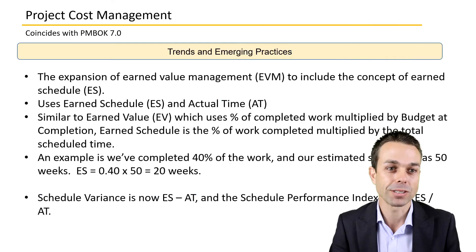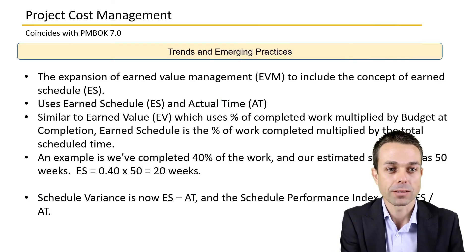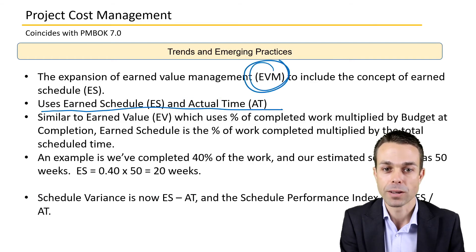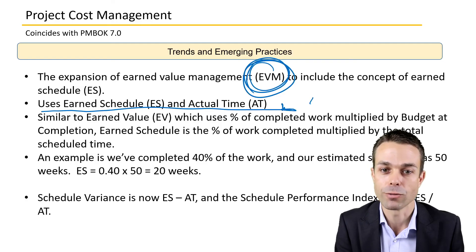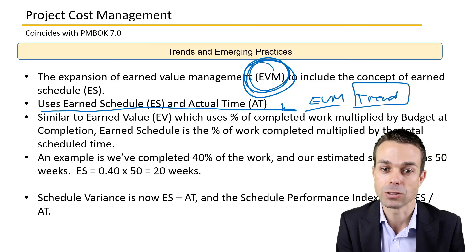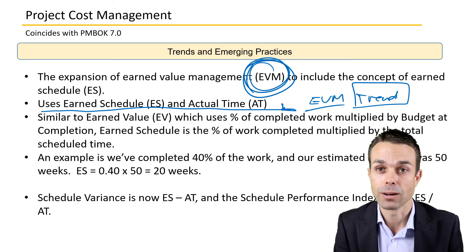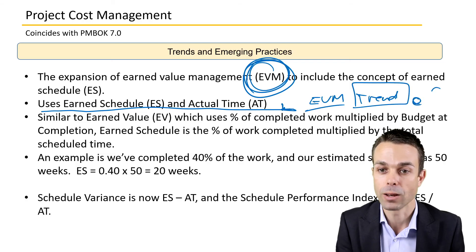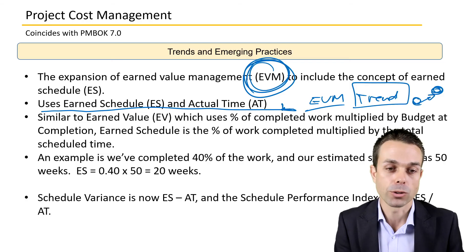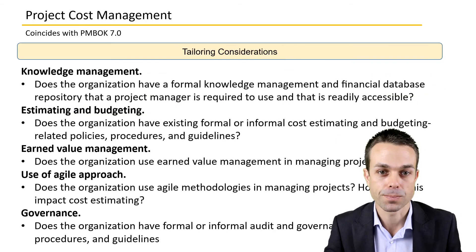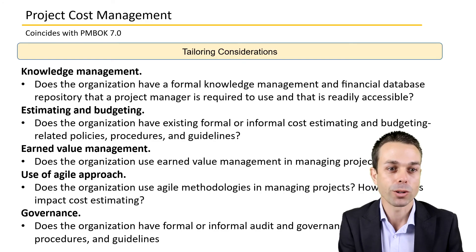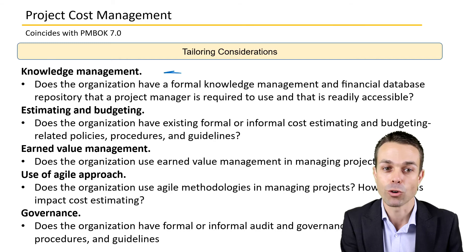Trends and emerging practices in project cost management include earned schedule and actual time as part of earned value management. These appear in our trend analysis — looking at how our project is trending or varying from where we planned versus where we actually are. Earned schedule is a newer item within earned value management worth noting.